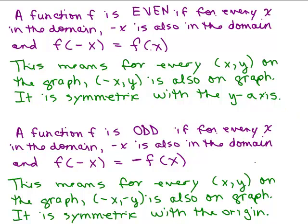And then we've got the definition of an odd function. It starts out the same: if there's an x in the domain, negative x must also be in the domain. And f of negative x is negative f of x.